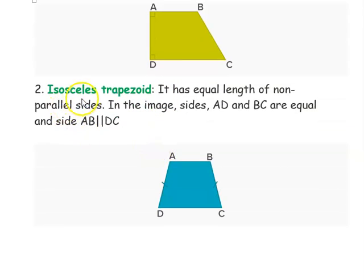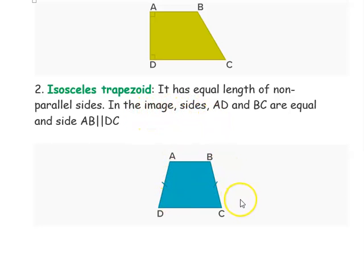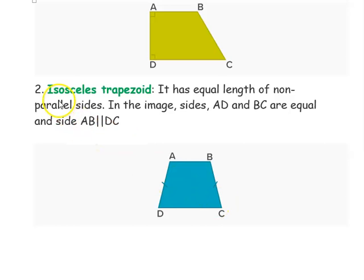The second type is the isosceles trapezoid, which has equal length non-parallel sides. In the image, sides AD and BC are equal and sides AB and DC are the parallel sides. So the two non-parallel sides AD and BC are equal in length.